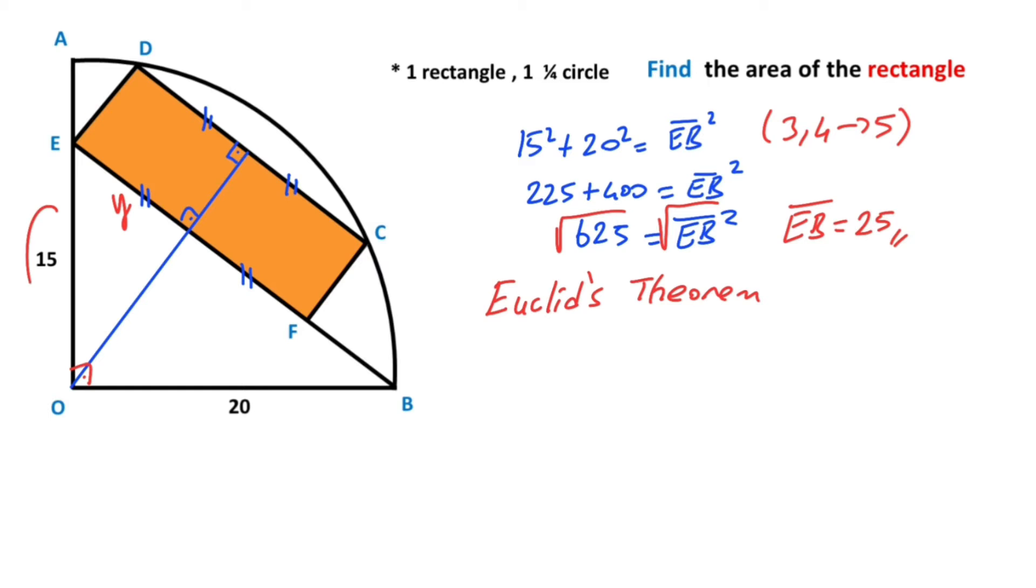According to Euclid's theorem, square of this length, 15 squared, must equal y times EB. Therefore, 225 equals y times...